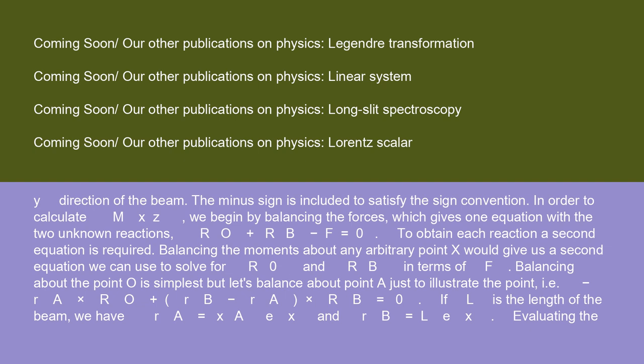Balancing the moments about any arbitrary point x would give us a second equation we can use to solve for RO and RB in terms of F. Balancing about point O is simplest, but let's balance about point A just to illustrate the point: rA·RO + rB·RB = rA·F = 0. If L is the length of the beam, we have rO = xA·ex and rB = L·ex.